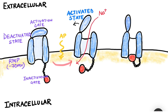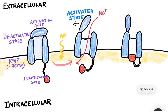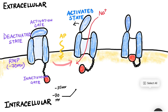Sodium trickles into the cell. When there was a resting membrane potential at minus 70 millivolts, a stimulus action potential took it up to a higher potential like minus 55 millivolts. If that is the threshold potential, at threshold potential the sodium channel gets activated, and that leads to influx of sodium from the extracellular compartment to the intracellular compartment, leading to something known as depolarization.